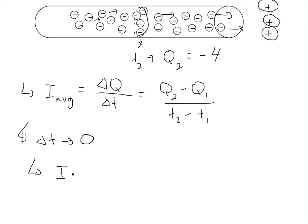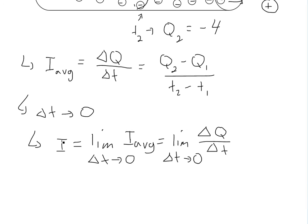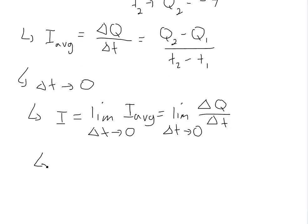This would equal limit as delta T goes to 0 of I average. If we write this down, limit delta T goes to 0 of delta Q over delta T. So the current is just the derivative of the charge right here. This is what I wanted to get through - that derivative can be used as an application of electric current. This equals dQ over dt.